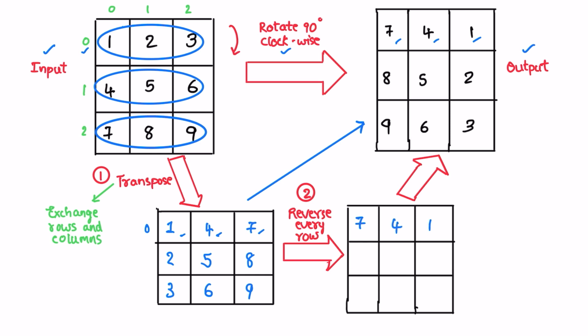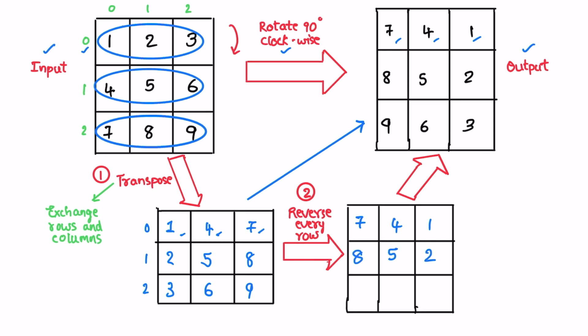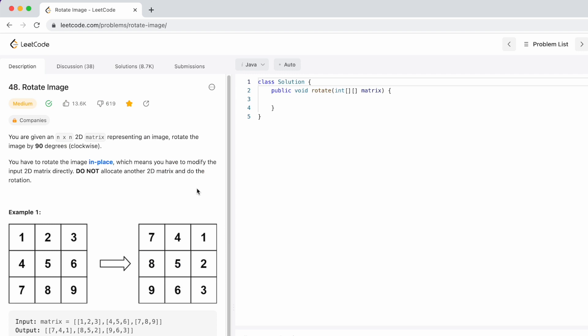Taking the second row, it will be displayed as 8, 5, and 2. The third row will be displayed as 9, 6, and 3, and these match the expected output. So we now have the output matrix. Let's perform these two steps using a Java program.